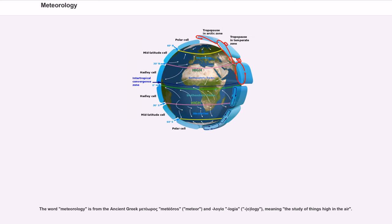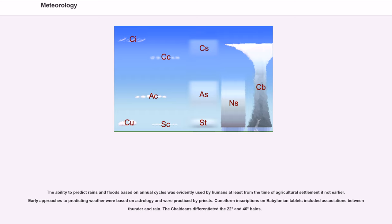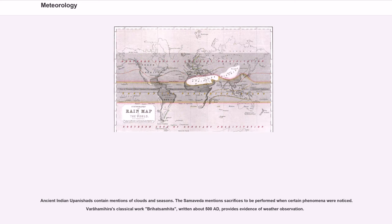The word meteorology is from the ancient Greek meteoros and logia, meaning the study of things high in the air. The ability to predict rains and floods based on annual cycles was evidently used by humans at least from the time of agricultural settlement if not earlier. Early approaches to predicting weather were based on astrology and were practiced by priests. Ancient Indian Upanishads contain mentions of clouds and seasons. Varahi Mahira's classical work Bryat Samhita, written about 500 AD, provides evidence of weather observation.